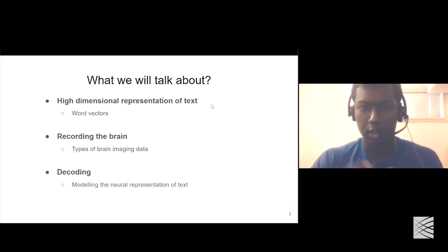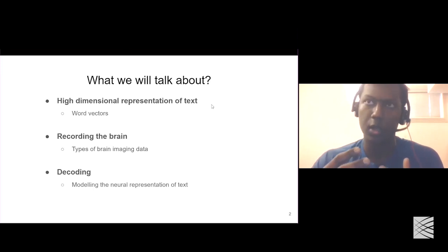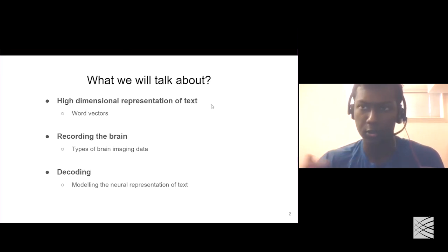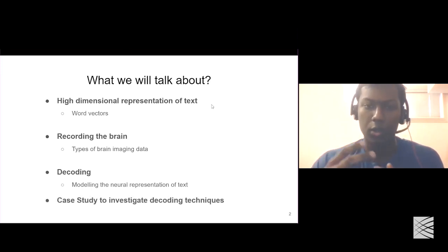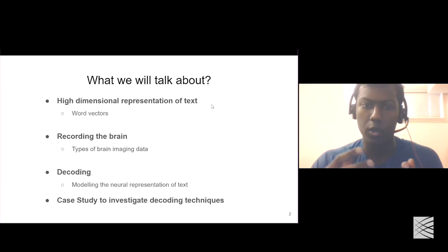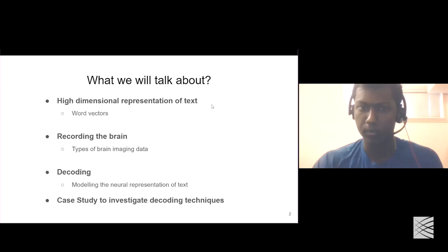After we have an understanding of word vectors and the types of brain imaging data, we are going to look at decoding — how we can use the two concepts to establish a relation between them. In the decoding section, we'll look at how computational models can build that association, and finally we'll see its applications in a study.